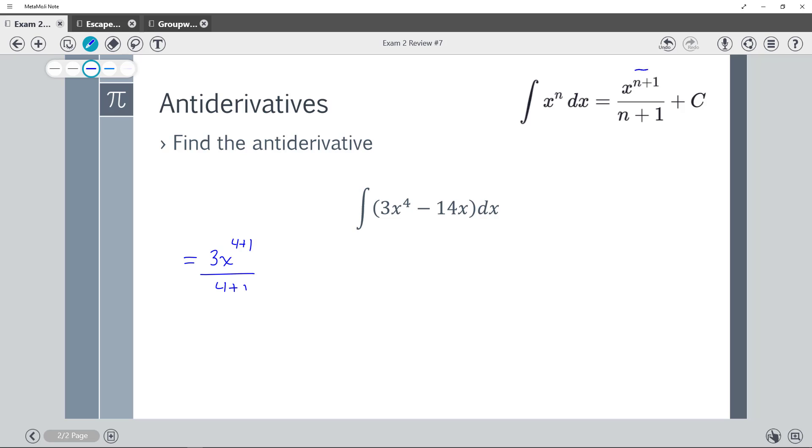That's this n plus 1, n over n plus 1. And then minus 14x, that's like to the first power, so it would be 1 plus 1 over 1 plus 1. And because this is an indefinite integral, we don't have values for a and b, we need to add our plus c.